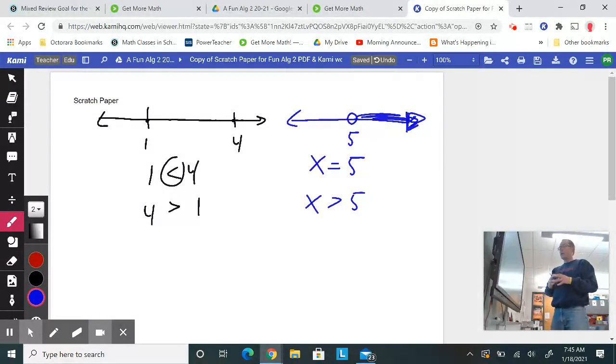If I wanted to include the 5, I'd put an equal sign, and I'd have to shade that in. So it's a good review there, right?